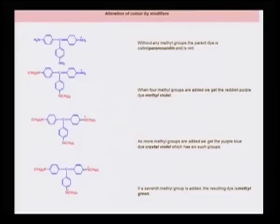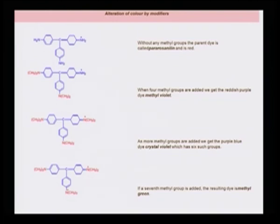Looking at different types of methyl incorporation: the first structure without any methyl group is the parent dye called para rosaniline and it is red in color. With two nitrogens having two methyl groups each — four methyl groups added — we get a reddish-purple color: methyl violet. When all three nitrogens have two methyl groups, more methyl groups are added and we get purple-blue, which is crystal violet. With a seventh methyl group added resulting in two of the nitrogens being charged, the color becomes methyl green. The methyl groups on the nitrogen create more hyperconjugation effect and deepen the color.